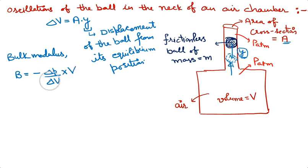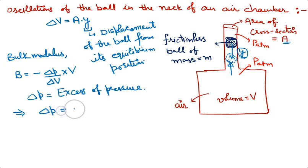B was defined as minus change in pressure upon change in volume into original volume. Delta P basically represents excess of pressure. That represents delta P excess of pressure. From here, delta P is equal to minus B into delta V by capital V.